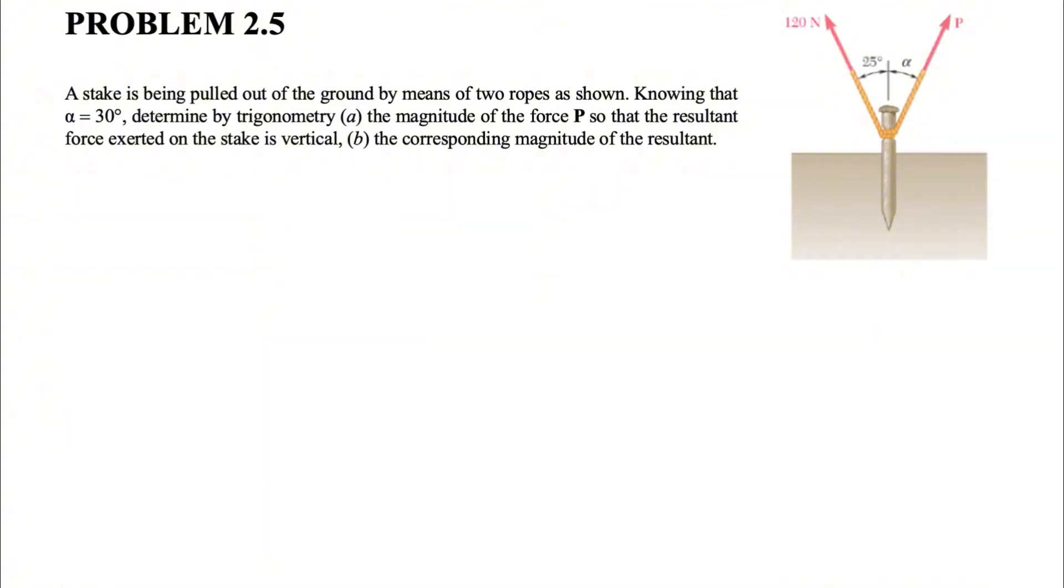We need to determine by trigonometry in part A the magnitude of the force P so that the resultant of these two forces is vertical, and in part B we need to determine the corresponding magnitude of the resultant.